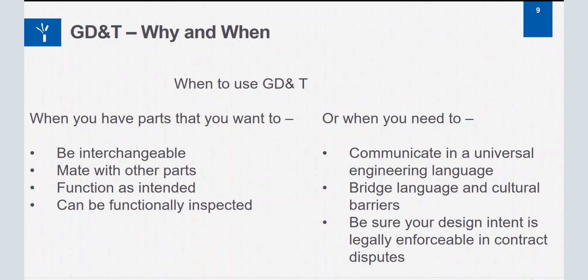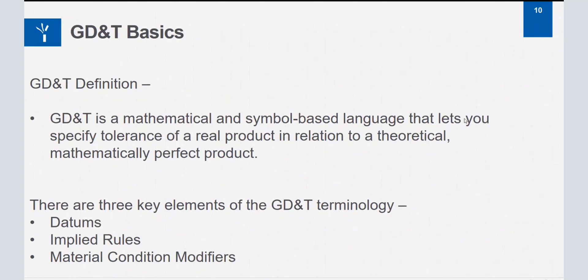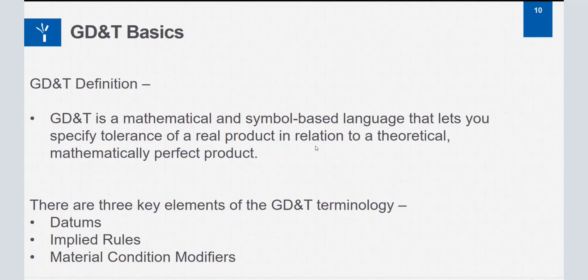Now let's look at the GD&T basics — the definition. GD&T is a mathematical and symbol-based language that lets you specify the tolerance of a real product in relation to a theoretically mathematically perfect product. The CAD model in Creo is the mathematically perfect model, and if we want to manufacture that product in real life, there has to be some variation. That variation of a real product compared to the CAD model can be strongly communicated using GD&T. There are three key elements of GD&T terminology: datums, implied rules, and material condition modifiers.